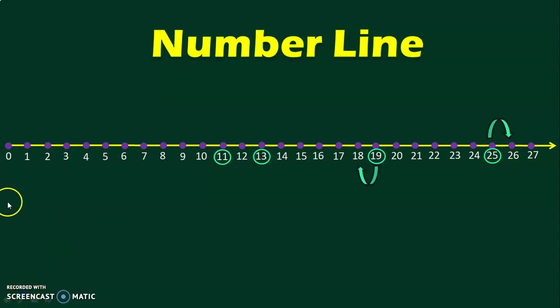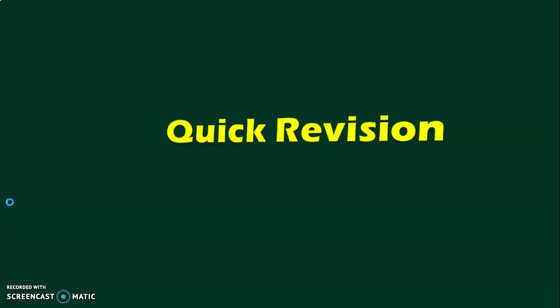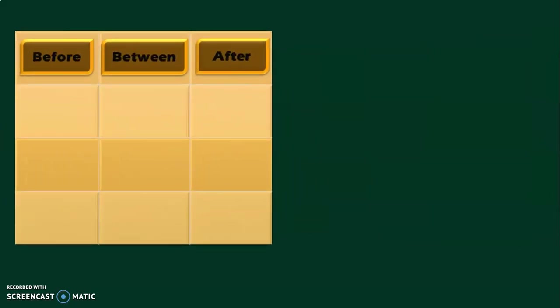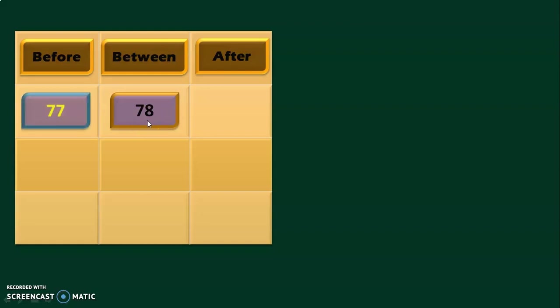Hope you are clear with what is after number, before number, and between number. Let us now do a quick revision with 2-digit numbers before we move into 3-digit numbers. Here, I have given the between number and we will have to find the before number and after number. The between number given is 78. The number before 78 is 77, and the number after 78 is 79.